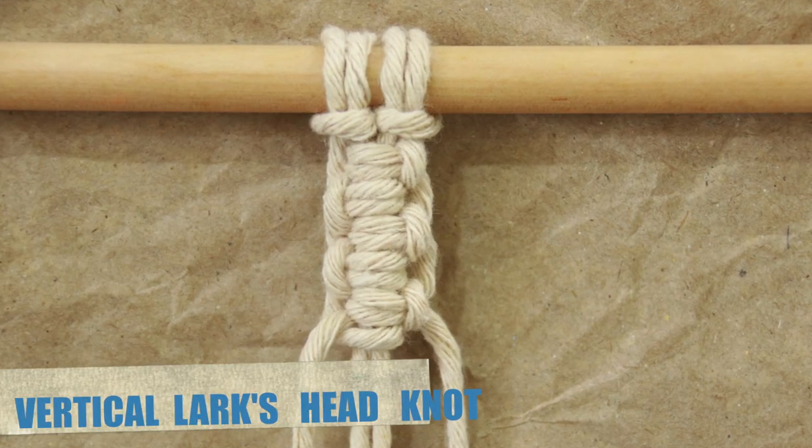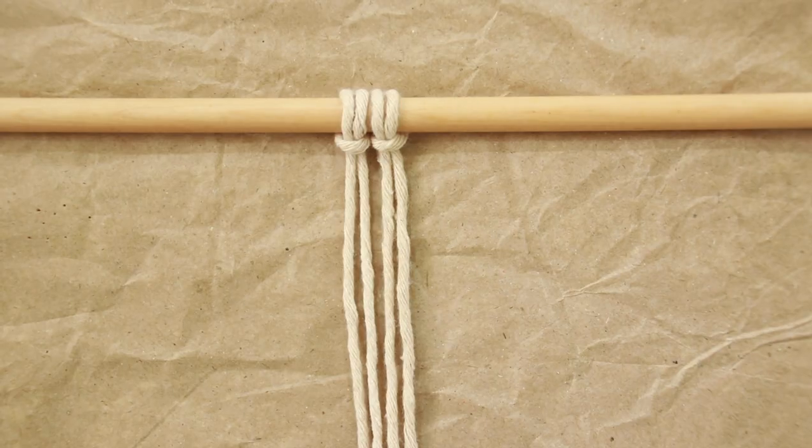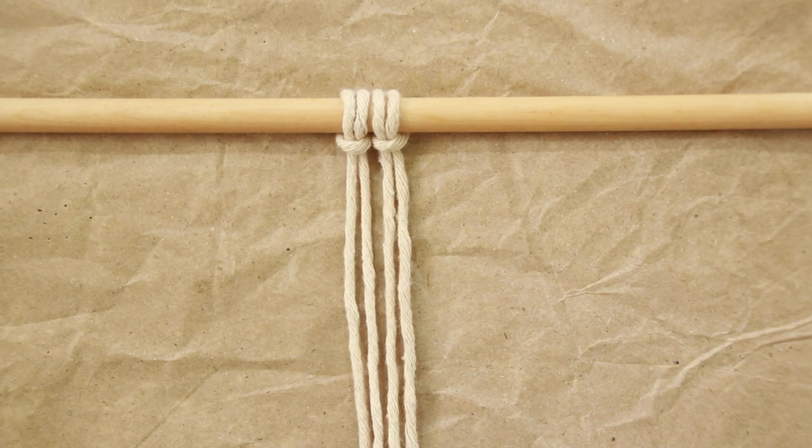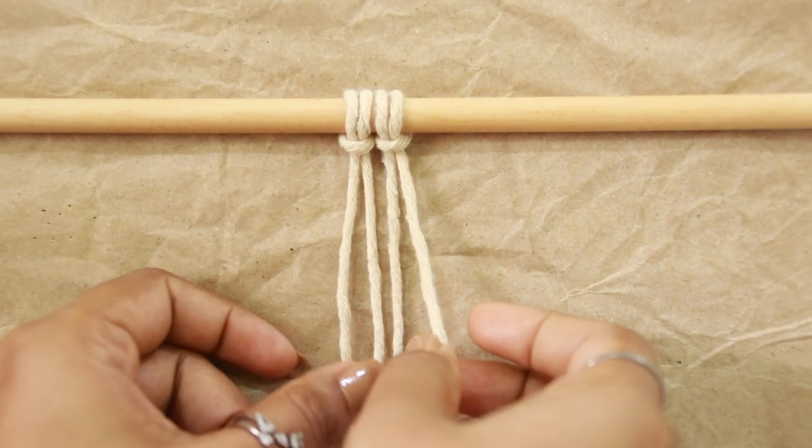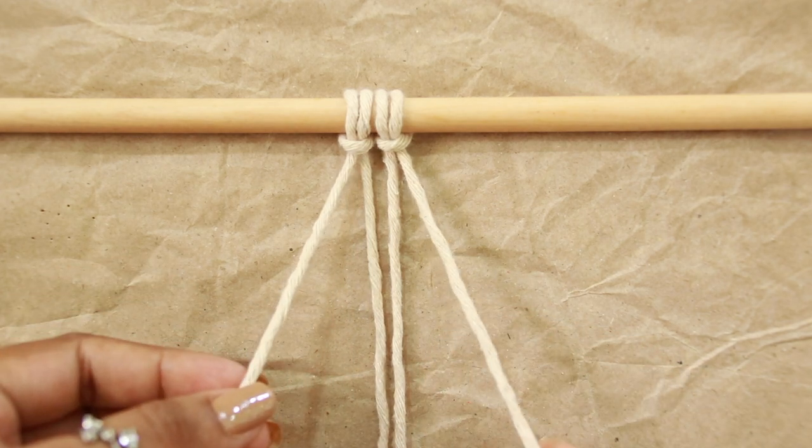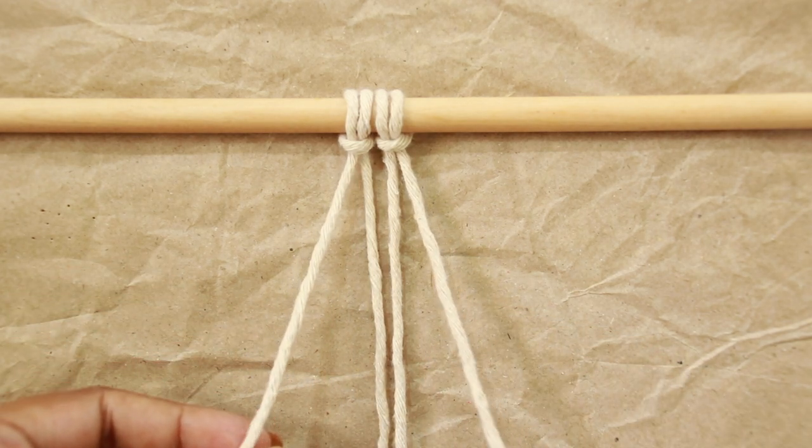For vertical lark's head knot, once you have two lark's head knots, the horizontal ones, out of these four strands, two outer strands are considered working cords, while middle two are filler cords.